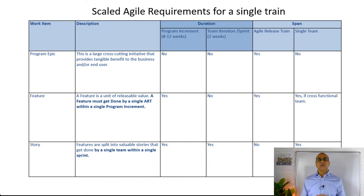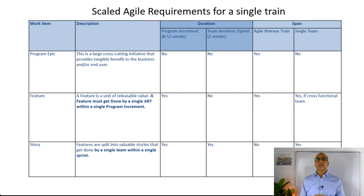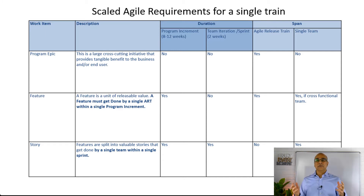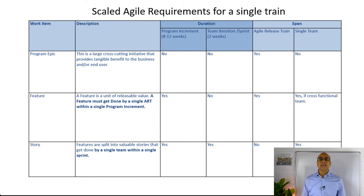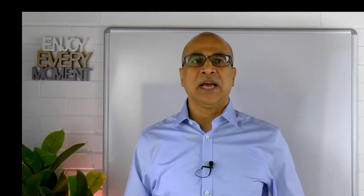The third item is a story. Features are split into stories. A story must fit within a program increment, must fit within a sprint, and must be done by a single team - you can't split a story across multiple teams. That's how it differs from a feature; a feature could span multiple different teams. A story must fit within an agile release train and within a single team. A download link for this table is available in the description below.